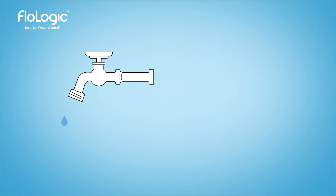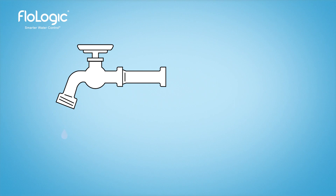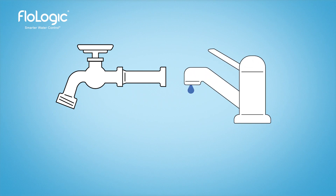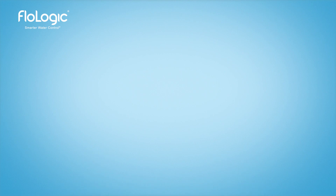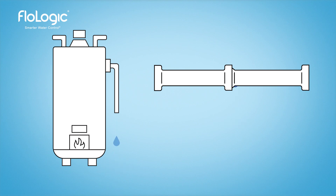Other common leak sources include hose bibs left on outside or dripping faucets inside. Potentially damaging leaks that aren't initially obvious can happen throughout a plumbing supply, such as at failing water heaters or pipes and fittings that may be hidden behind walls and beneath a floor.